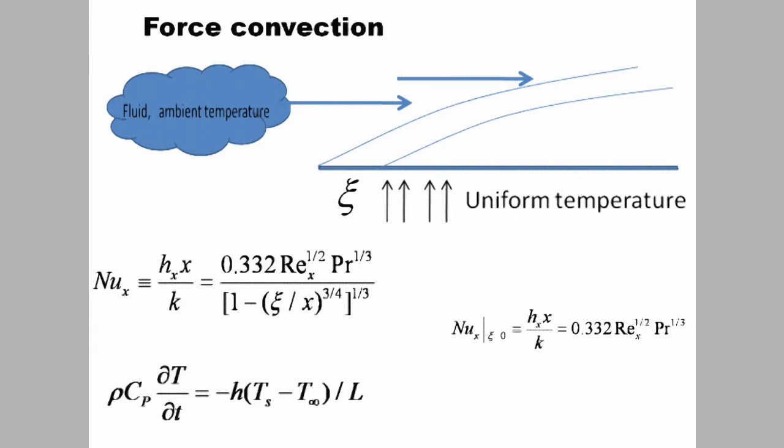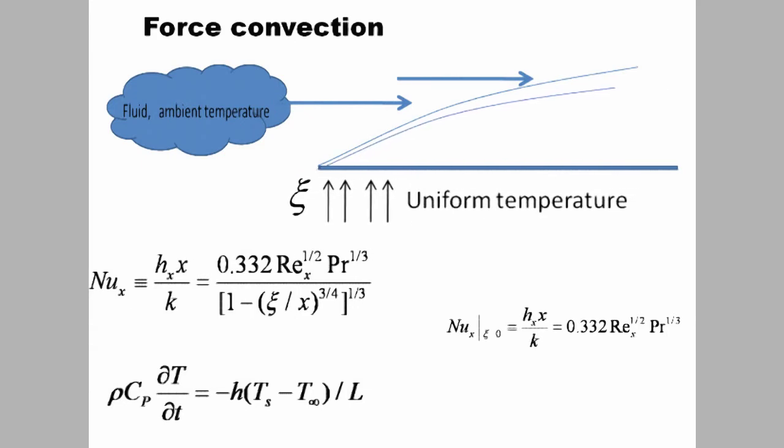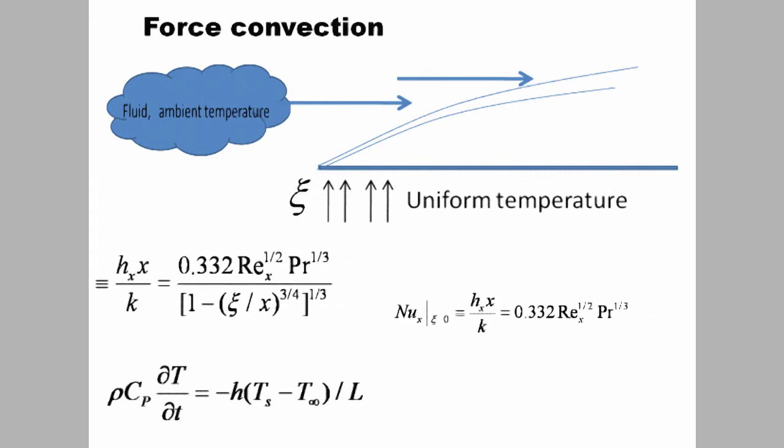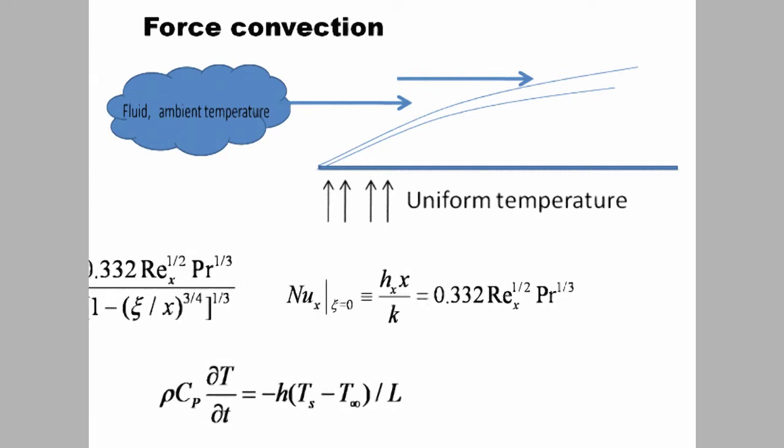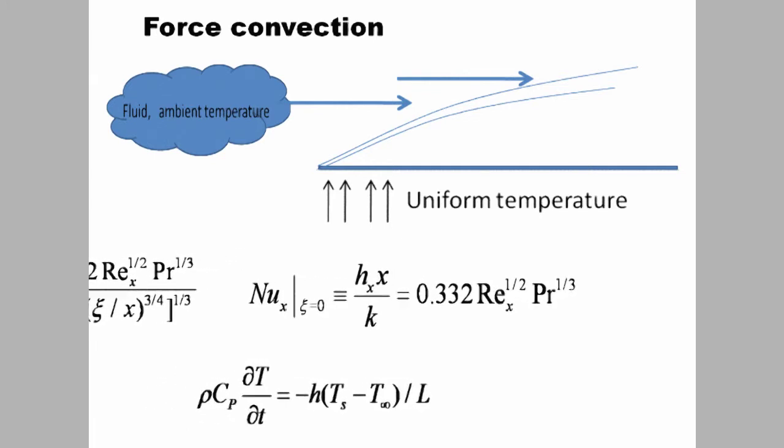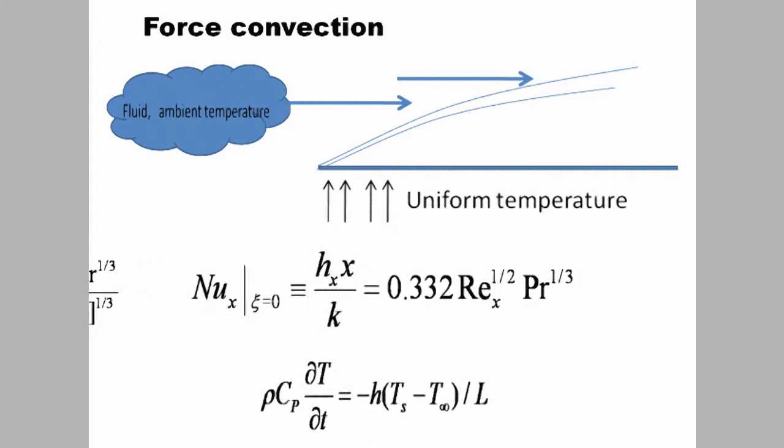For the situation where the fluid flows toward the heated side of the plate, the denominator term from the previous calculation is simply eliminated, and the simple Nusselt number correlation, a function of Reynolds and Prandtl numbers, remains. The same procedure is used to find the heat transfer coefficient and to integrate to find cooling time.